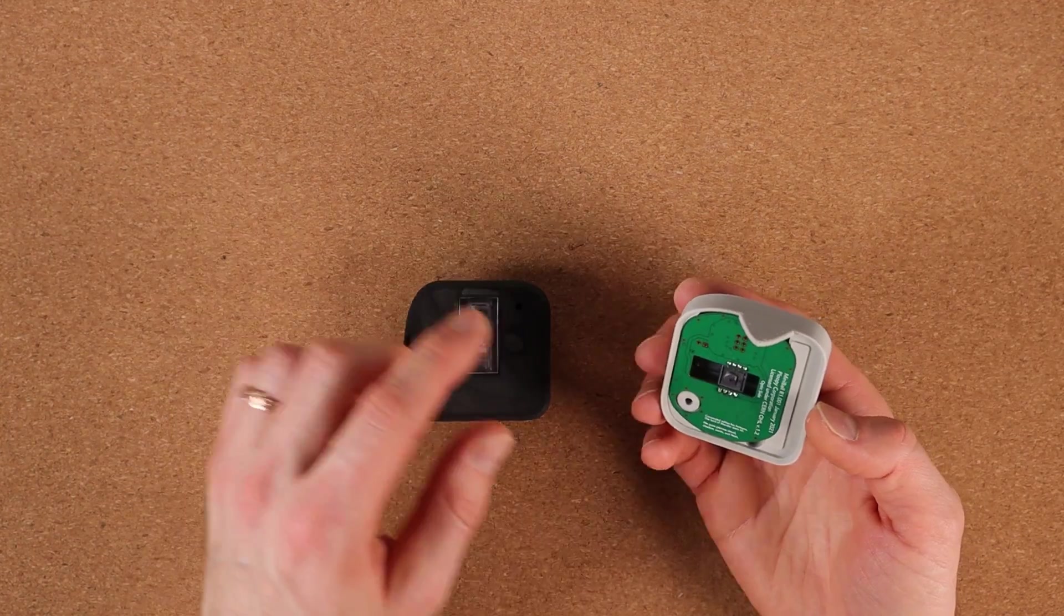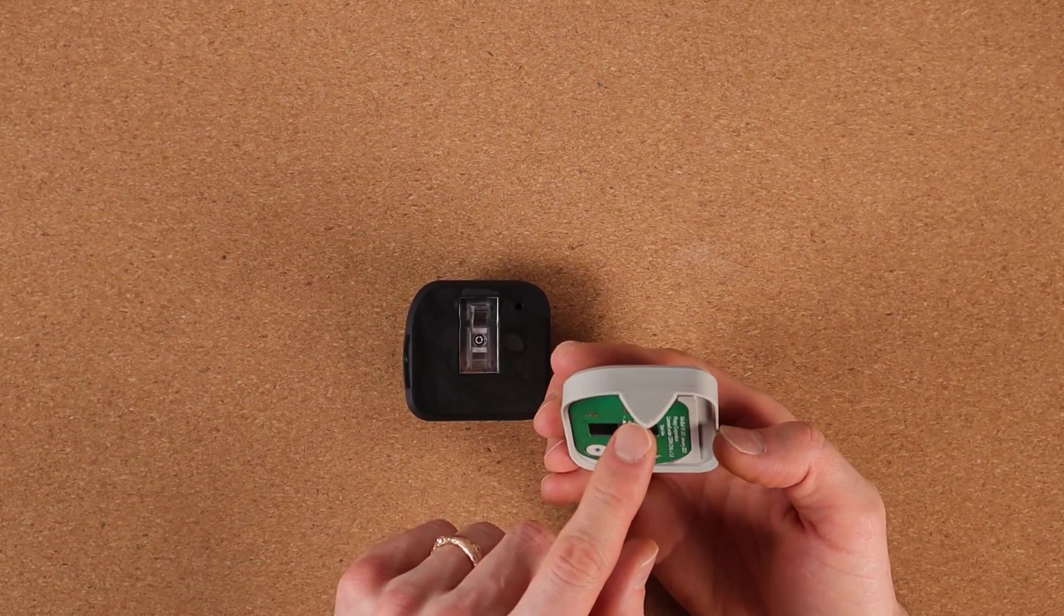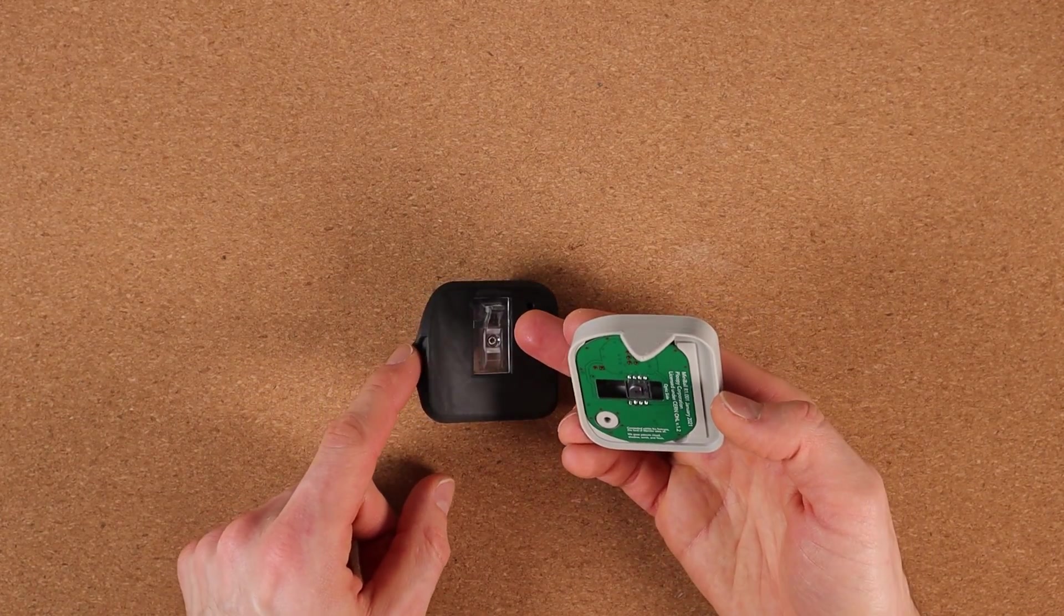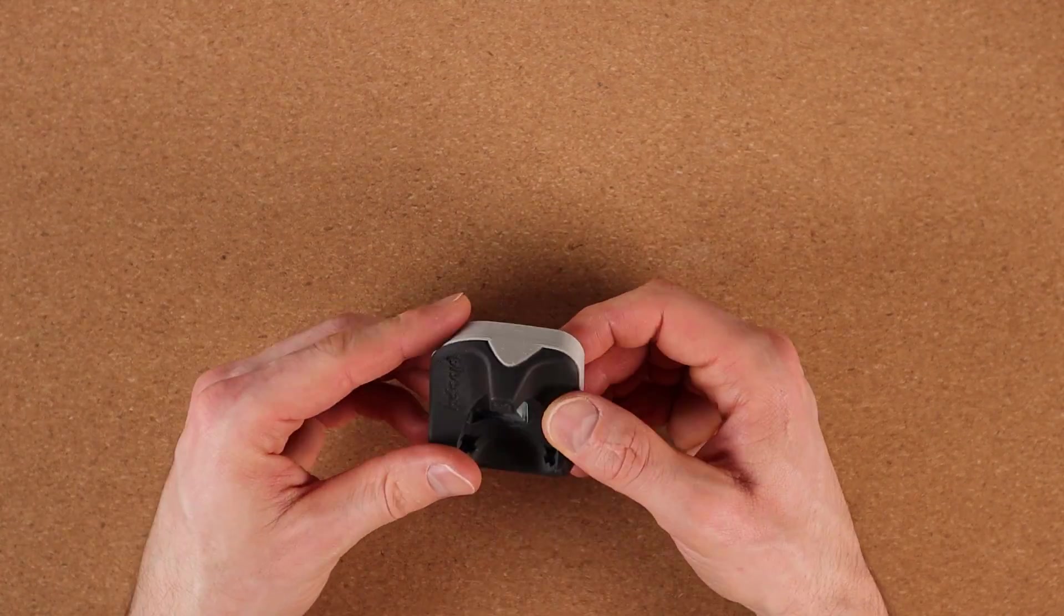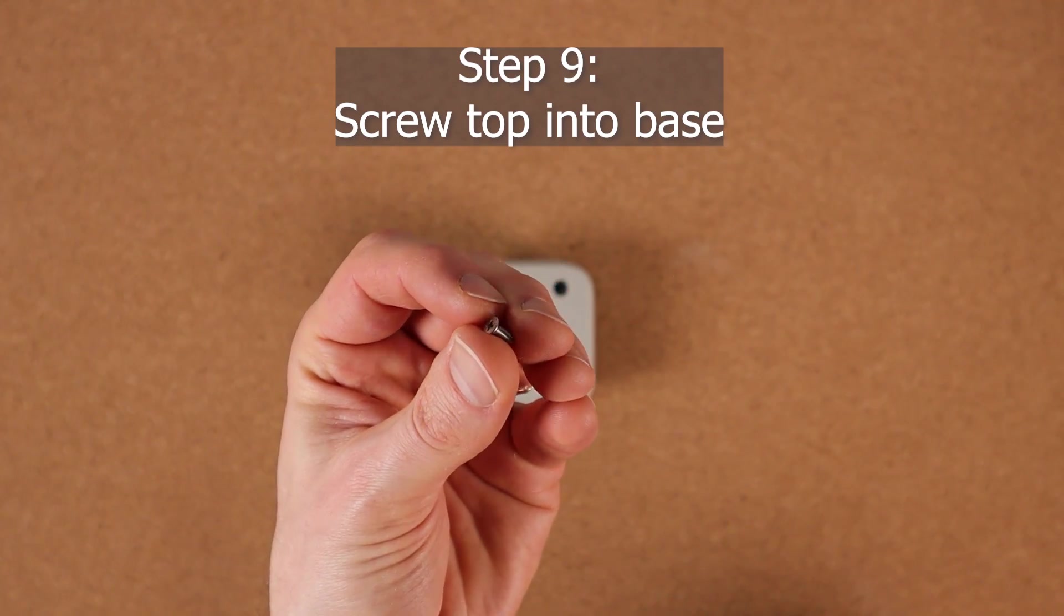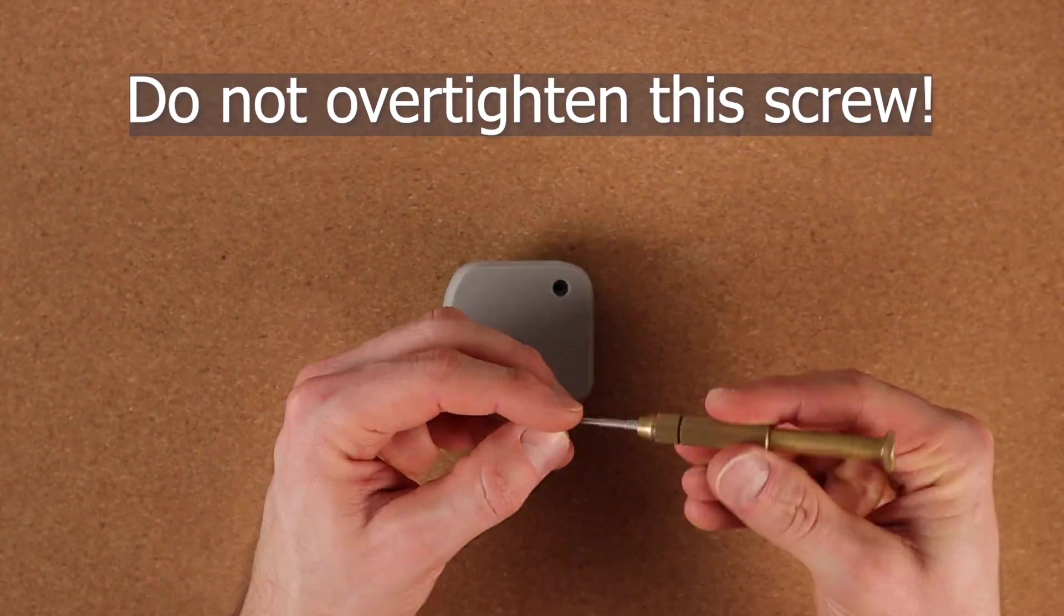Okay. Next step is we put the bottom onto the top. Everything's loose here. So there's a little triangle here that lines up with the triangle on this side. Then you screw the bottom onto the top with our one tiny screw.